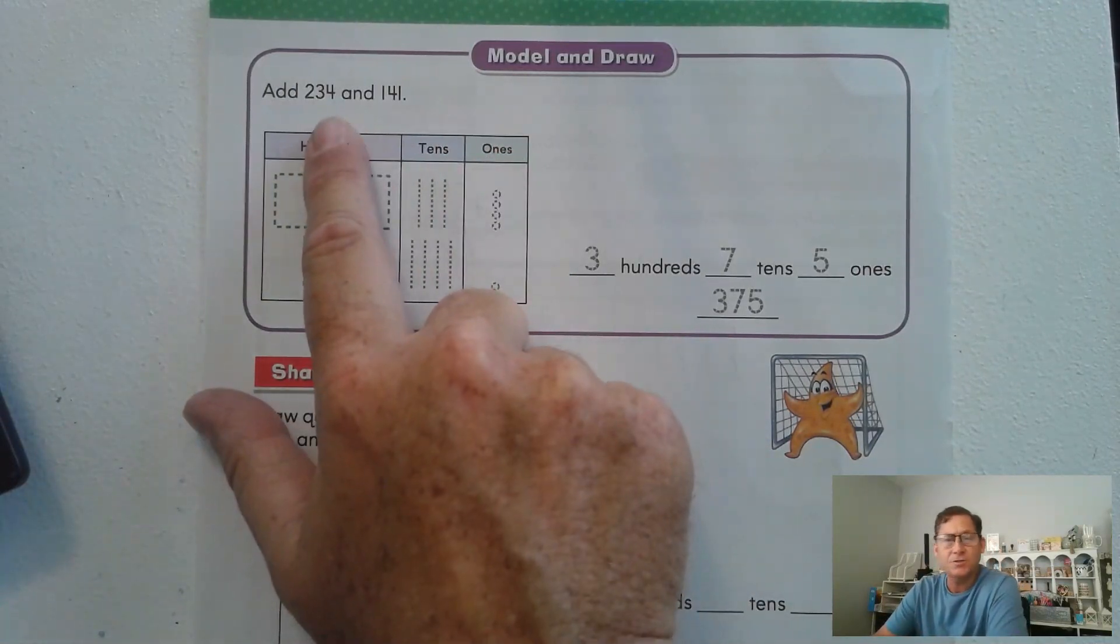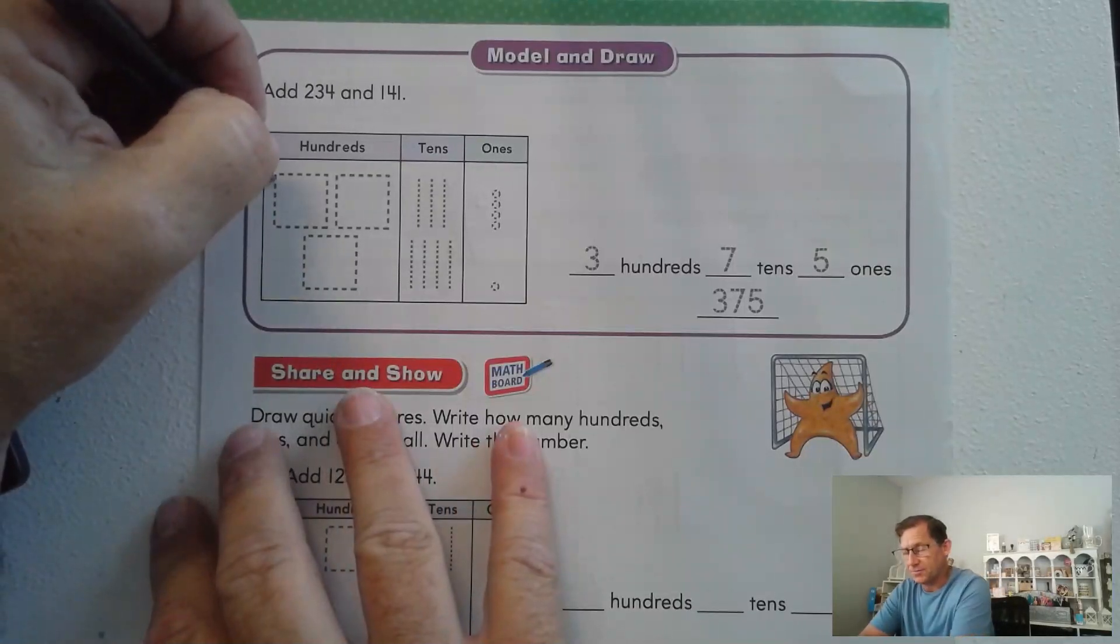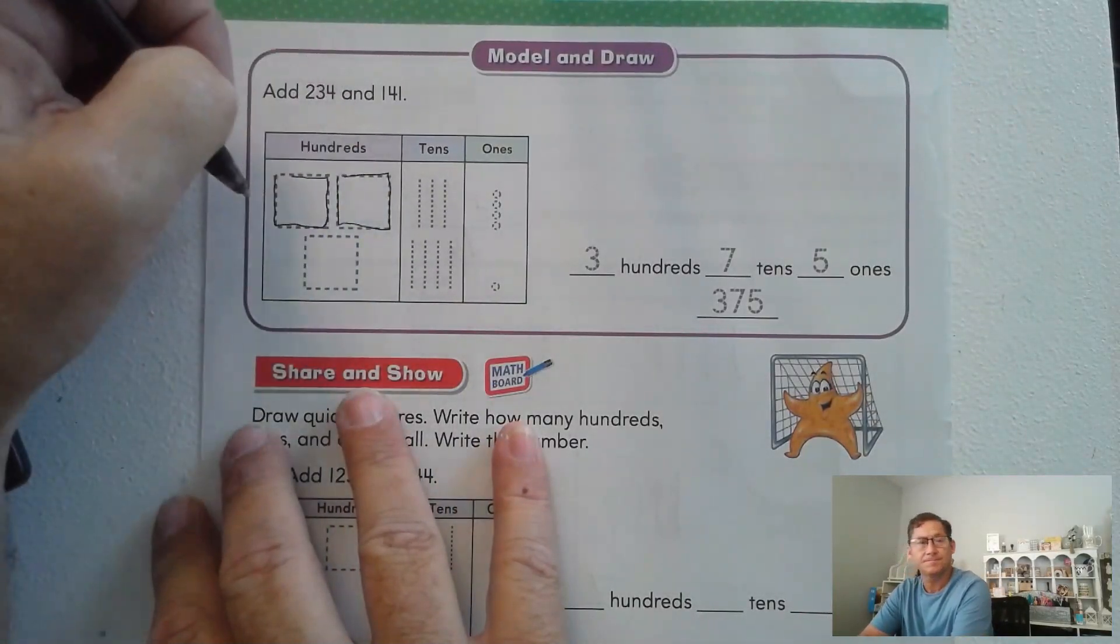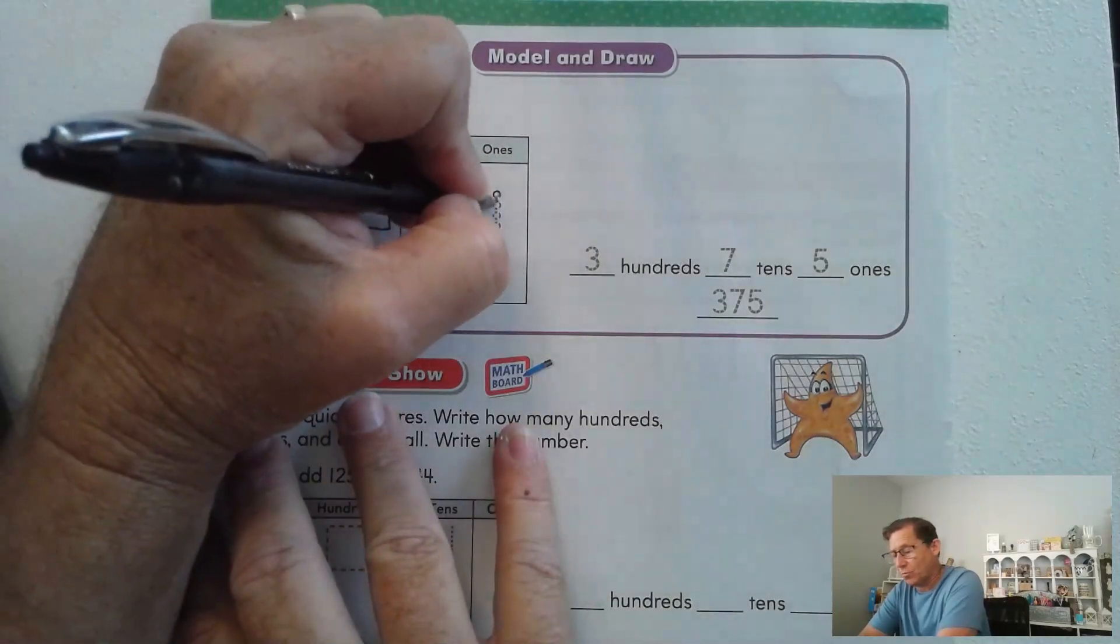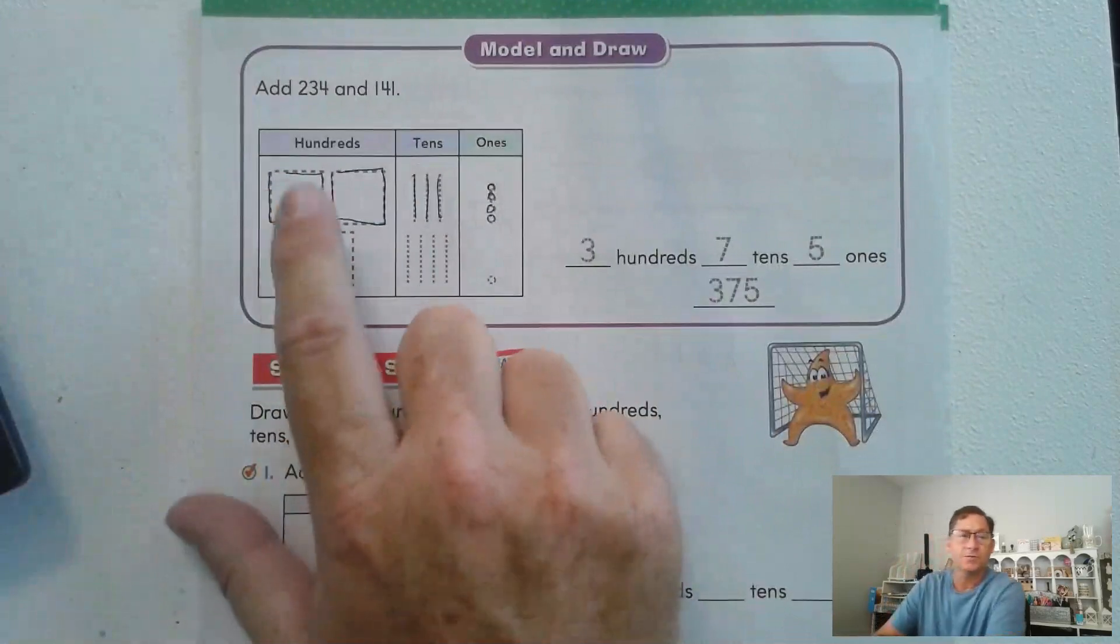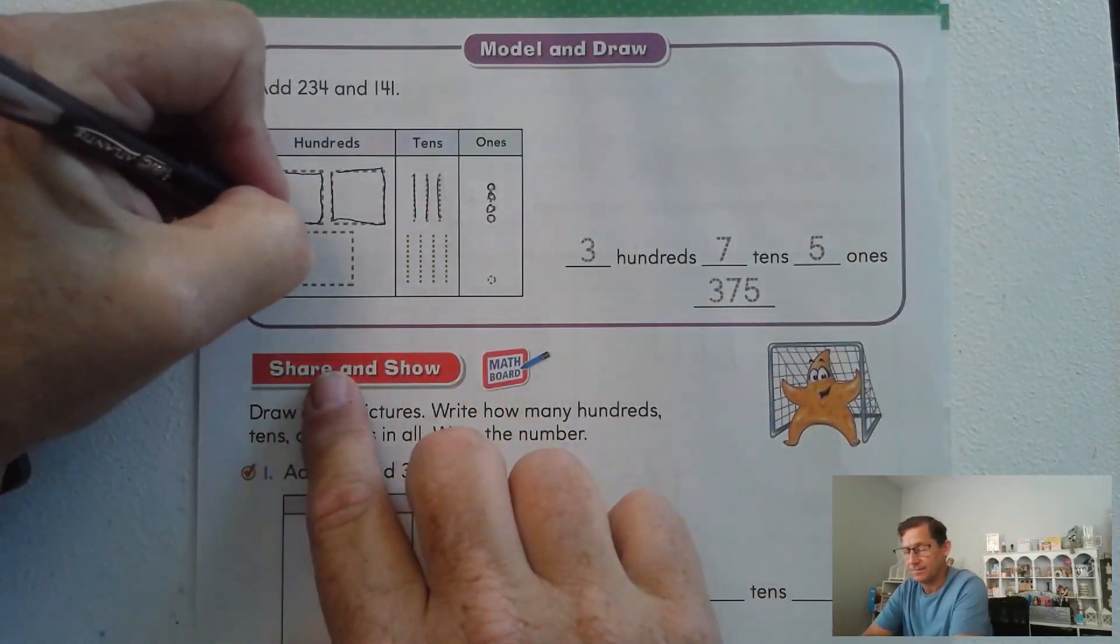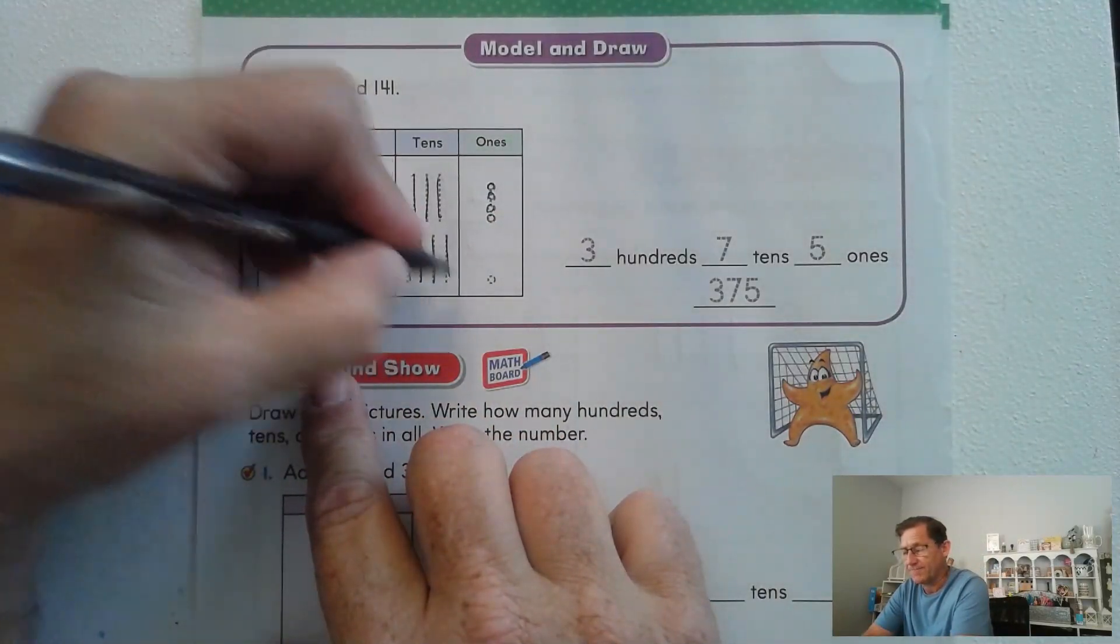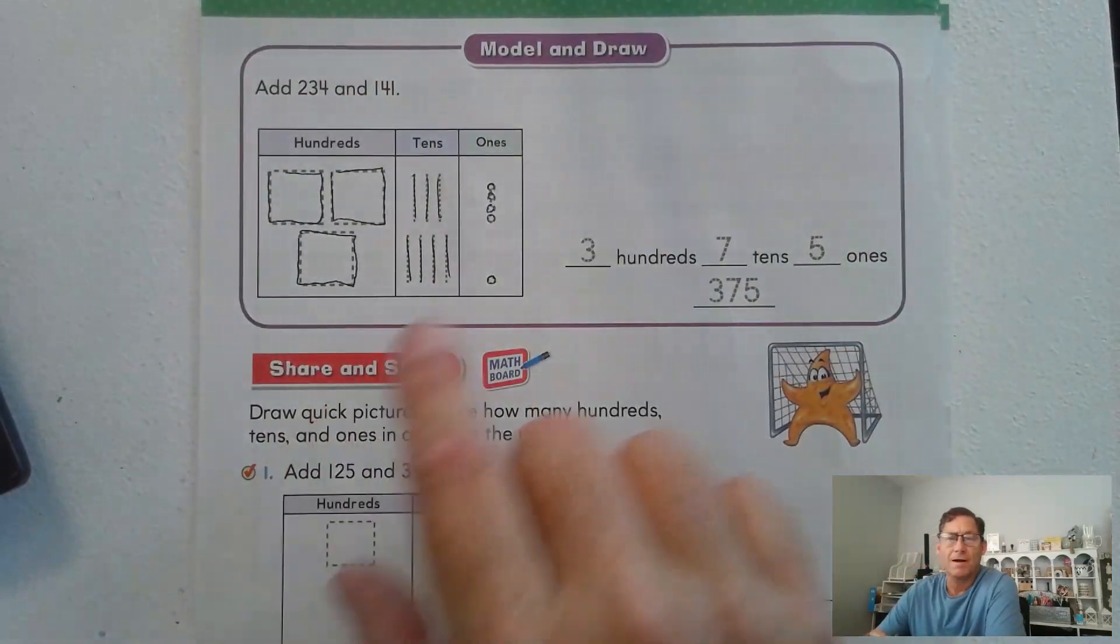So we're going to add 234 and 141. So the quick picture for 234 would be two squares, three tens, and four ones. 141 will be one square, one, two, three, four tens, and one one.